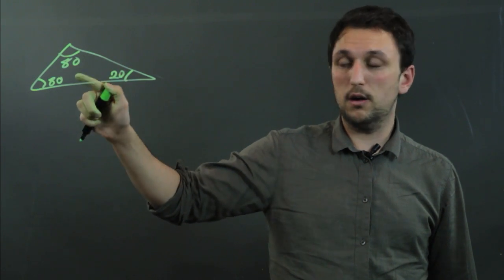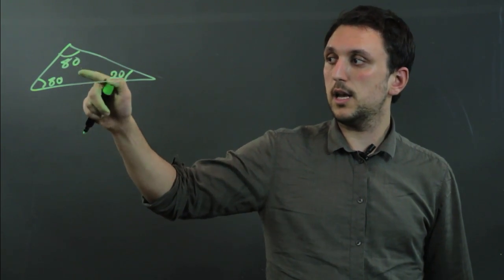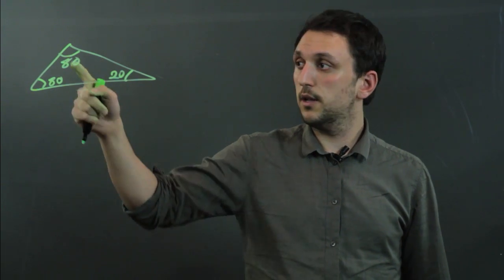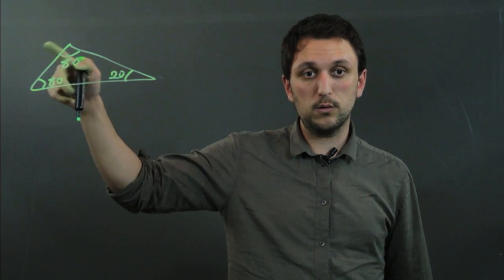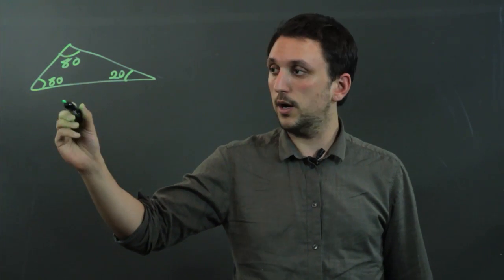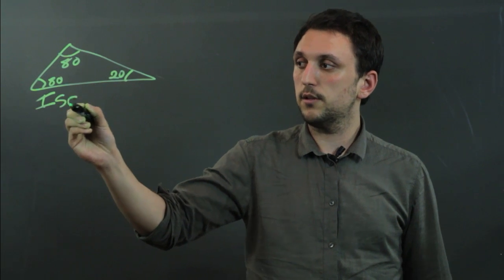Now this isn't drawn to scale, but if a student sees 80, 80, 20, then the two angles are equal, which means that two sides have to be equal, so you can ask them to label it isosceles.